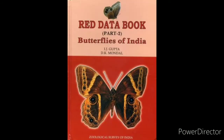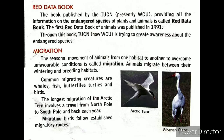The next topic is the Red Data Book. The book published by the IUCN providing all information on the endangered species of plants and animals is called the Red Data Book. The first Red Data Book of animals was published in 1991. India ki jo Red Data Book hai, us ke andar information dhi gayi hai about the endangered species of plants and animals of India.